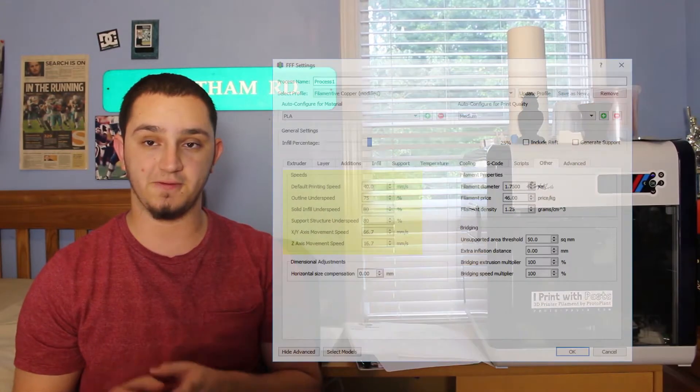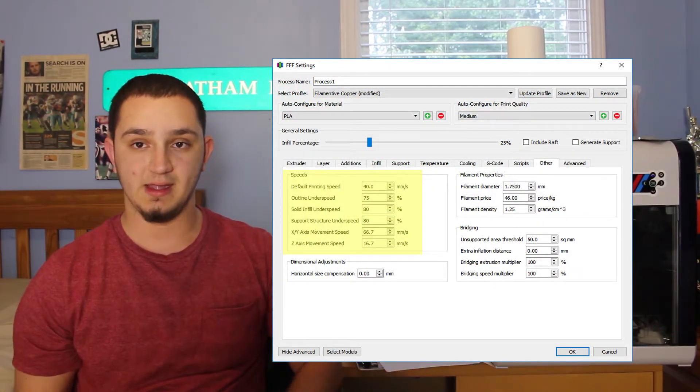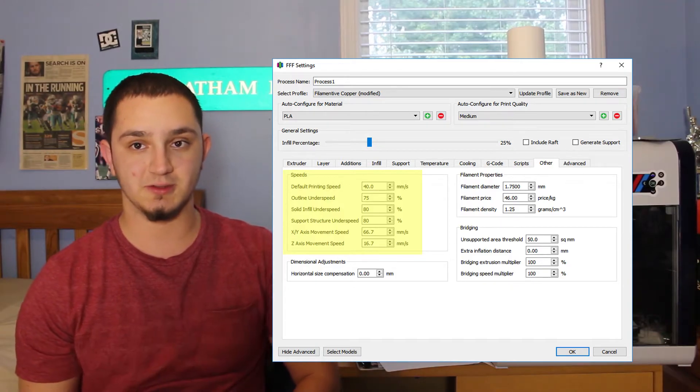I did run models with different complexities and different settings, and I found a range of print speeds that work best. I found something around 40 millimeters a second. It really depends on your print speed and your nozzle. I would recommend a 0.4 millimeter nozzle.